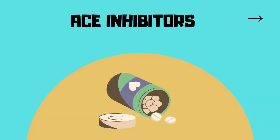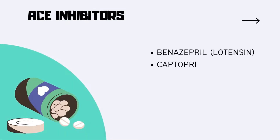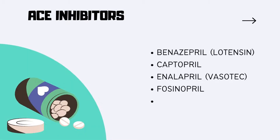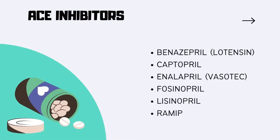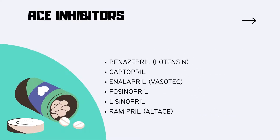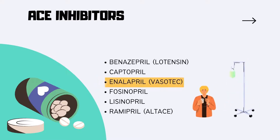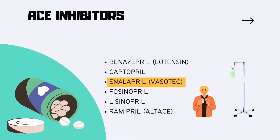Examples of ACE inhibitors include Benazepril, Captopril, Enalapril (or Vasotec), Fosinopril, Lisinopril, and Ramipril. All of the ACE inhibitors are prescribed orally, except for Enalapril, which can be given intravenously. There are various other ACE inhibitors used in clinical practice. You can download the drug dosing chart of ACE inhibitors from the description below.